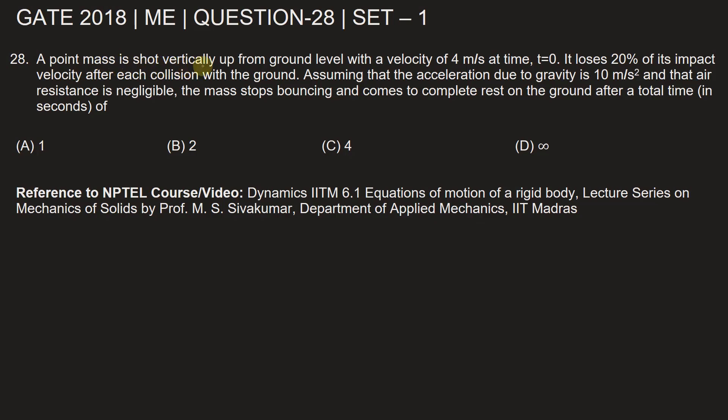A point mass is shot vertically up from ground level with a velocity of 4 meters per second at time t equals zero.